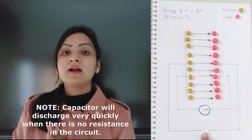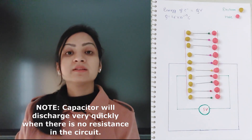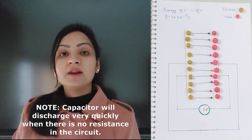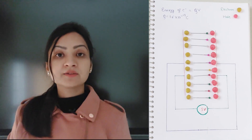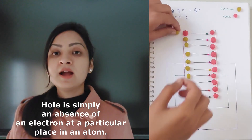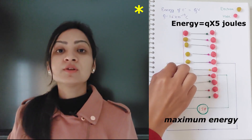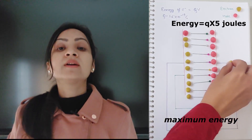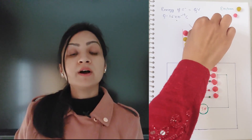Let us say that initially the voltage across these two parallel conducting plates is 5 volts. We now place a resistor and close the circuit. The capacitor will now act like a 5 volt battery and begins to discharge, because current will flow since the circuit is closed. The electrons will now move towards the positively charged plate where the concentration of holes is more. As the electron leaves its initial position, a hole appears at that location, and this first electron travels with the maximum energy — energy is QV.